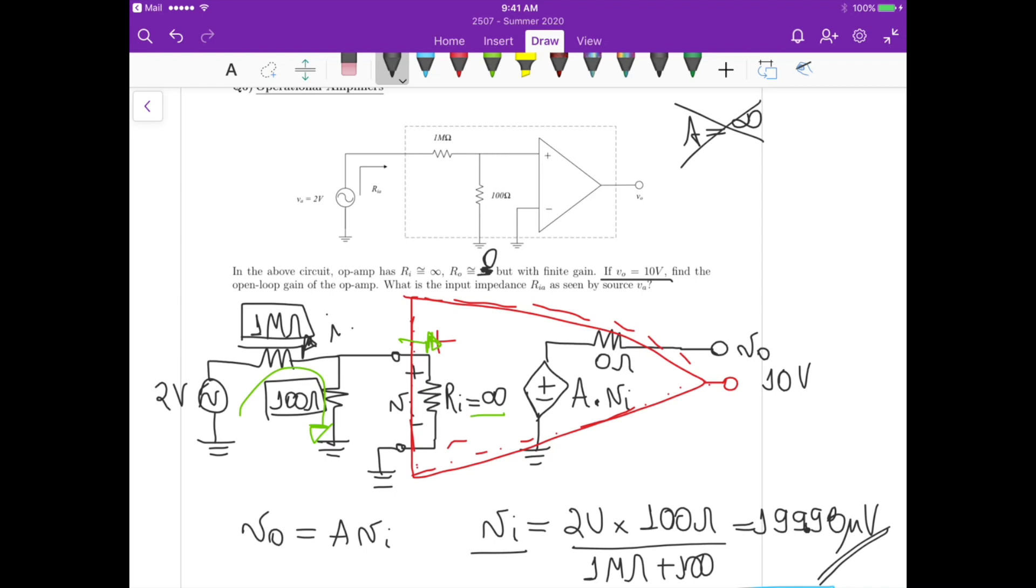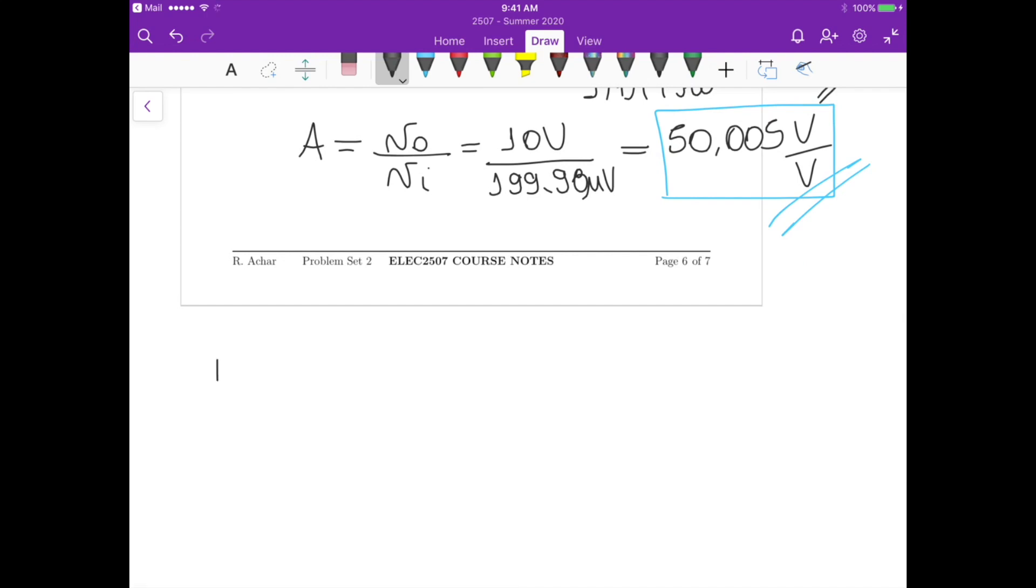So we could calculate what's the value of this current that's flowing here. We could call this I_a, and then we have here V_a. So the ratio would be like the input resistance for part 2—it would be the ratio between V_a divided by I_a.